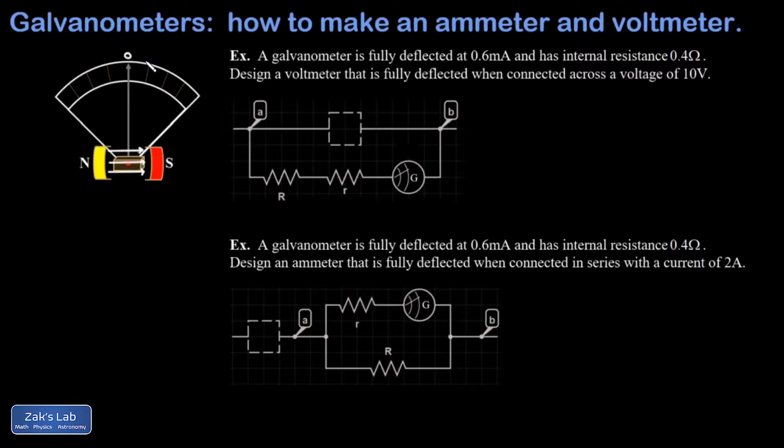When the galvanometer is plugged into a potential difference, current will flow through the coils, creating a magnetic field. Those coils then interact with the magnetic field from the permanent magnet, and the larger the current, the larger the torque exerted on the needle, and it will deflect further along the scale.